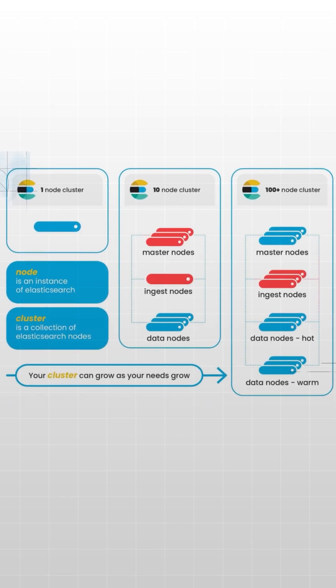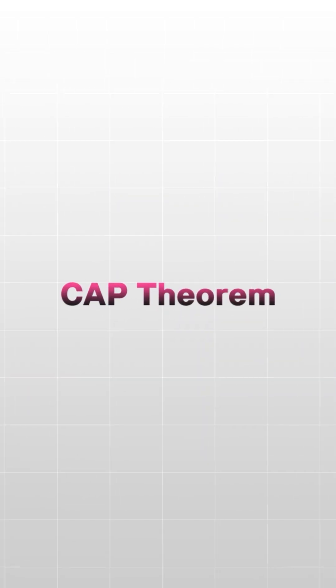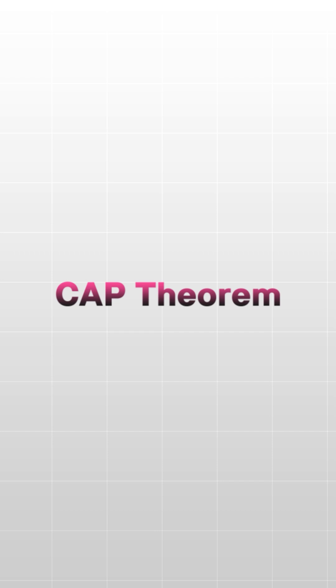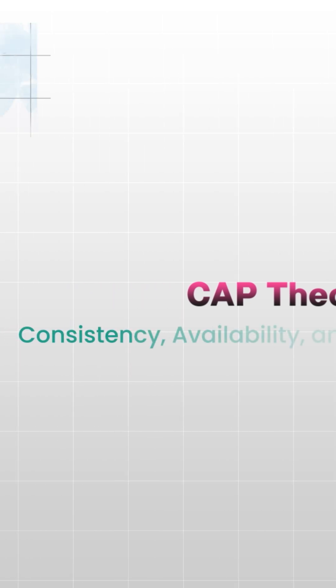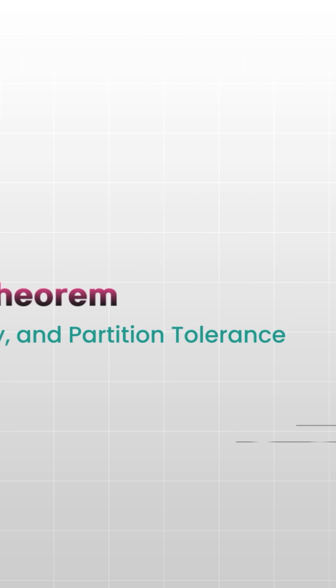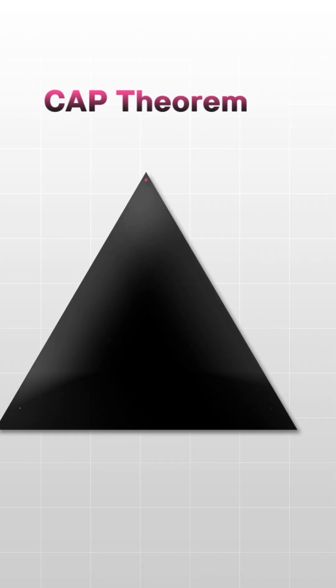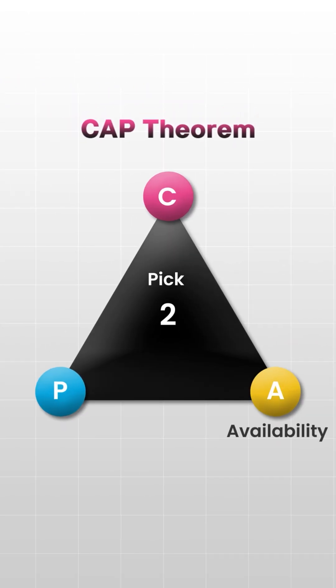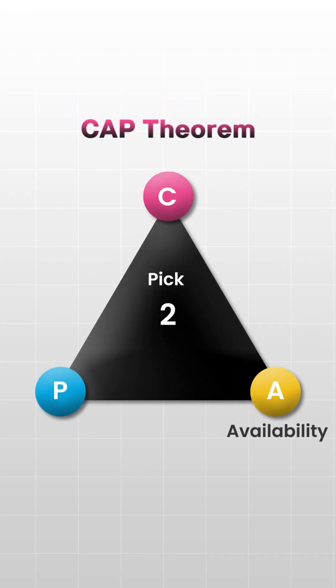CAP theorem states that a distributed system can only guarantee two of these three properties: consistency, availability, and partition tolerance. Elasticsearch prioritizes high availability — even if some nodes fail, the system remains operational.